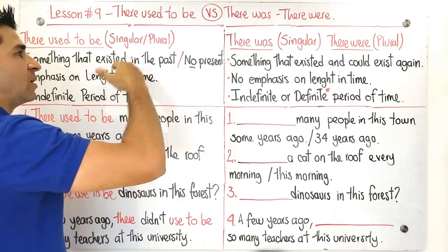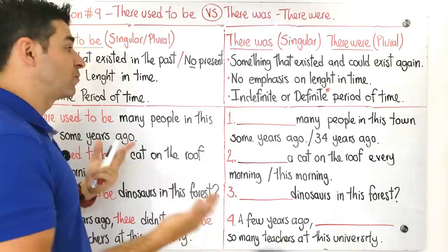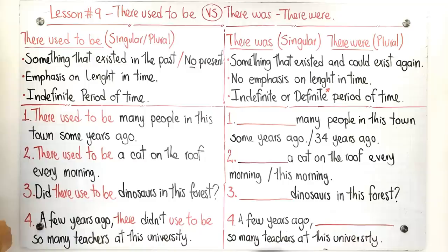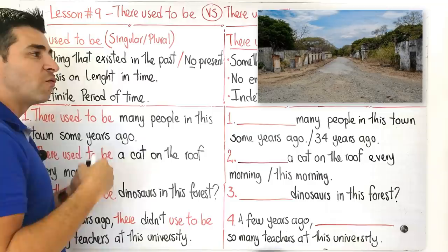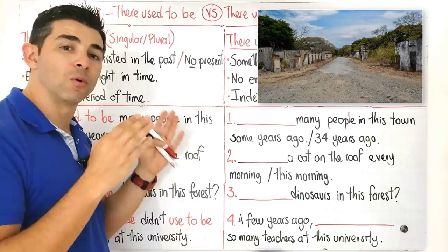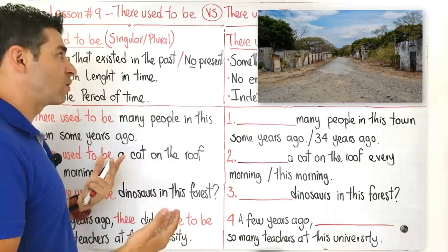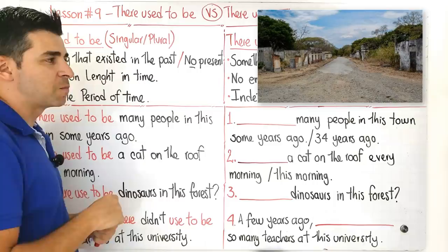These are some other differences of these two topics and some directions that are going to be very important for you to take into account. So take note of this and we're going to analyze them with these four exercises here. Now we're going to start with this number one and this is going to be the picture for you to have the context. The context is going to be very important for you to understand and to decide whether to use one word or another. In this case, whether to use there used to be, there was, and there were.